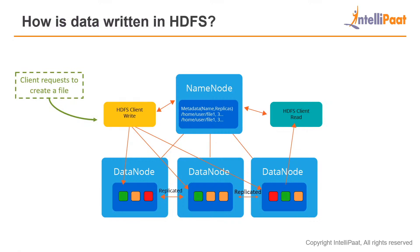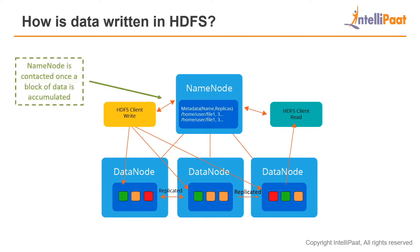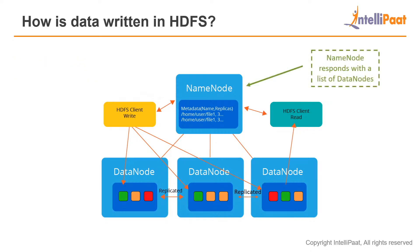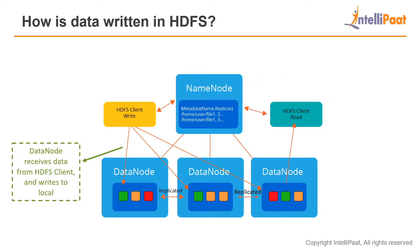If you're trying to write a file onto the HDFS, the client will request to create a file and that information will be sent to the name node. The name node is contacted once the upload has accumulated to the point where a block size has been reached. The block size is the threshold set in HDFS — if the file is above a particular size, it will be divided into parts of that block size. You take the entire file size and divide it by the block size set in your HDFS, and the file will be divided into that many blocks. The name node then responds with a list of data nodes that are available and free to store the file. The data nodes receive data from the HDFS clients and write it to their local space — they write the file parts, the blocks, to the space that they have.